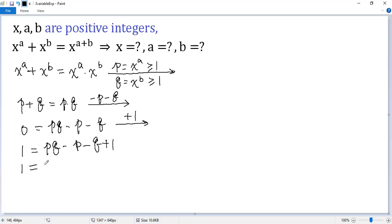For the first two terms, we can take the common factor p out. So p times q minus 1. For the second two terms, take negative 1 out. So get q minus 1.